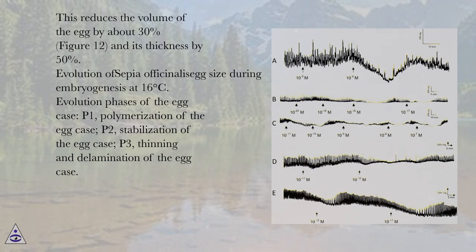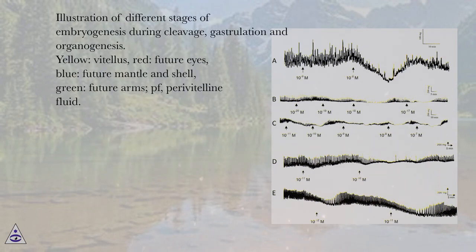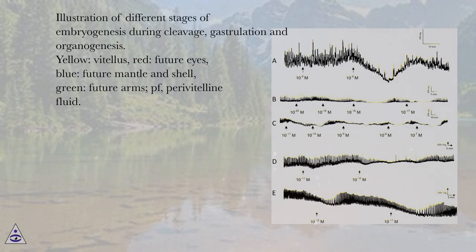Evolution phases of the egg case: P1, polymerization of the egg case; P2, stabilization of the egg case; P3, thinning and elimination of the egg case. Illustration of different stages of embryogenesis during cleavage, gastrulation, and organogenesis. Color coding: yellow, patellis; red, future eyes; blue, future mantle and shell; green, future arms; PF, paravitelline fluid.